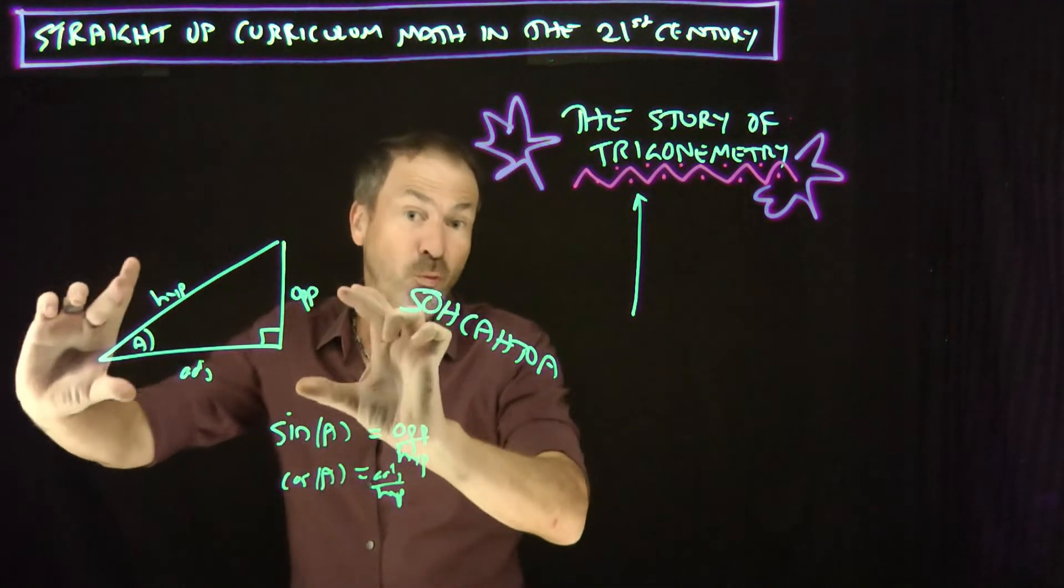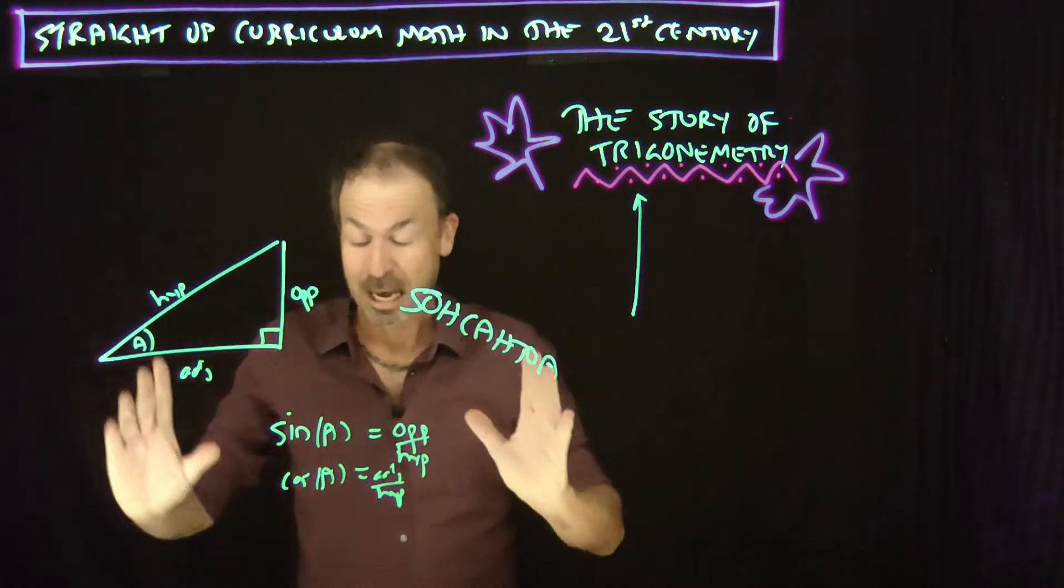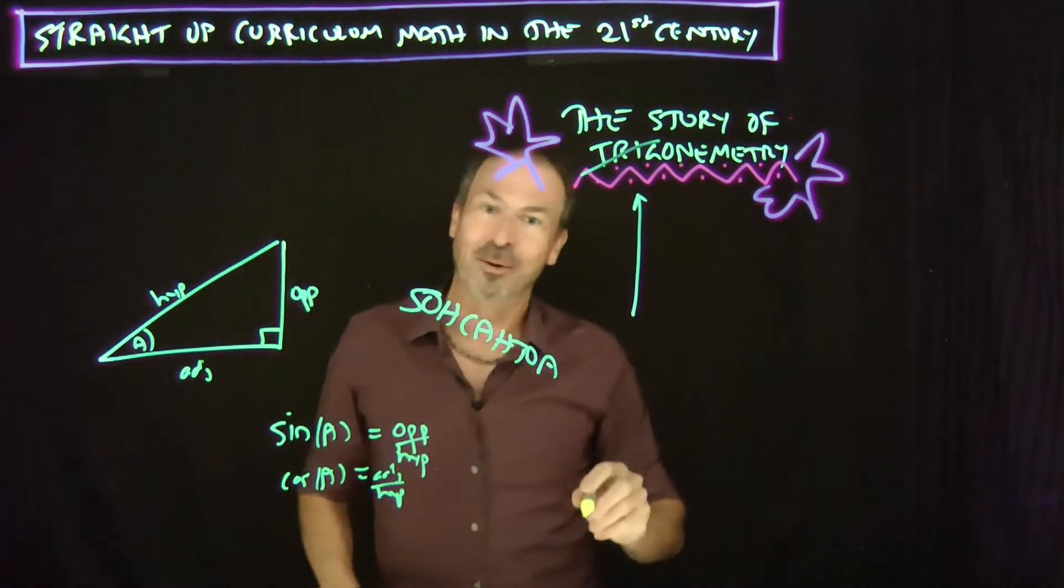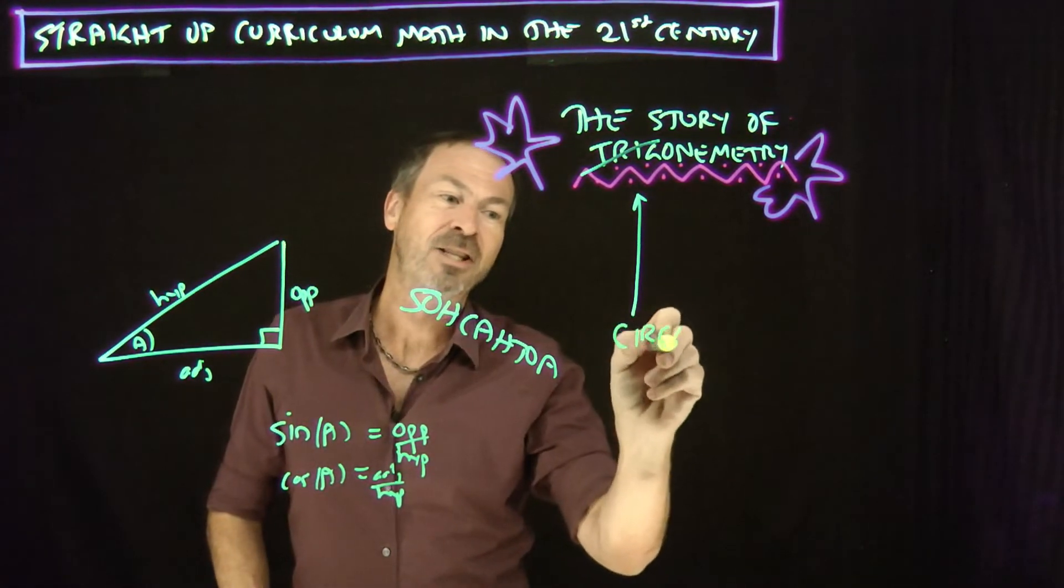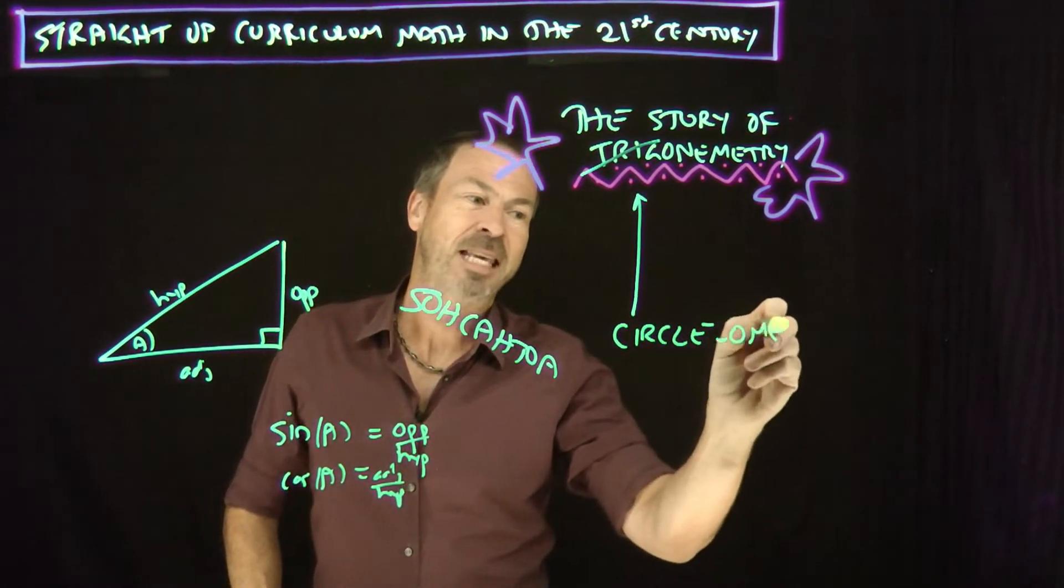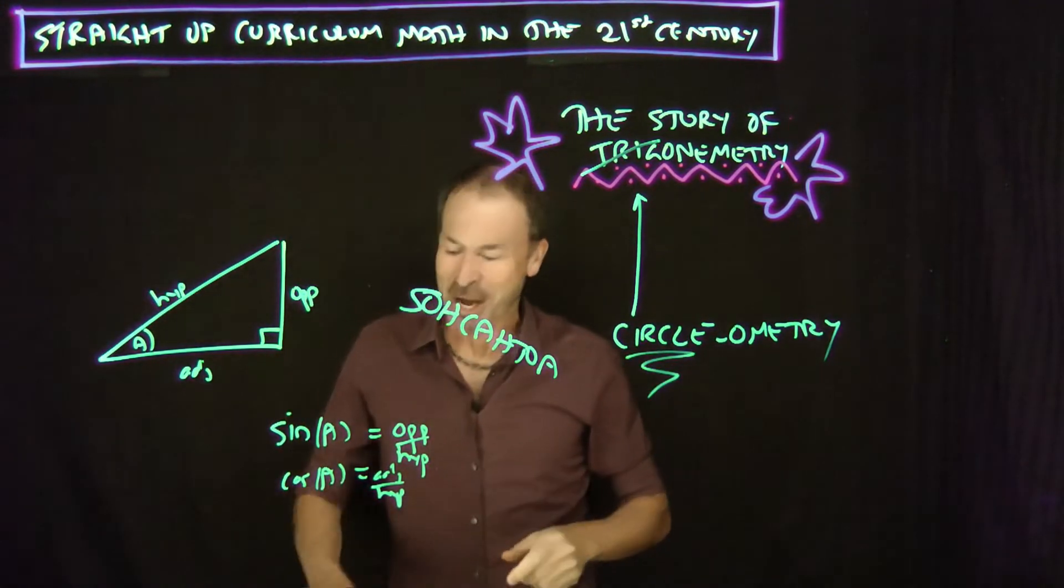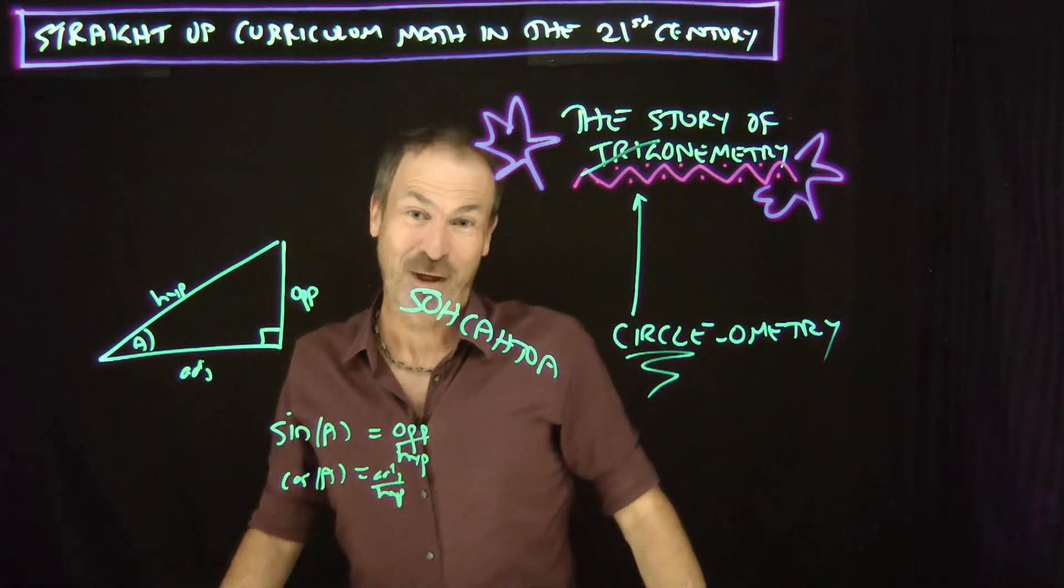Sure, people have been thinking about right triangles from very early ages. But really, really the compelling part of the story is not trigonometry about triangles. It really should be circleometry. A theory about circles. That is strange, very strange. But let me talk about it because it's actually very natural.